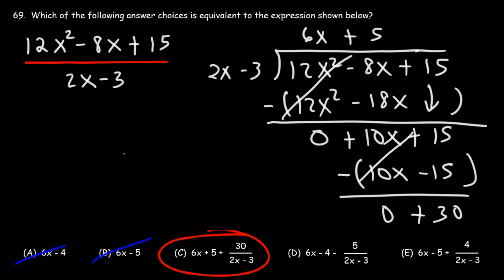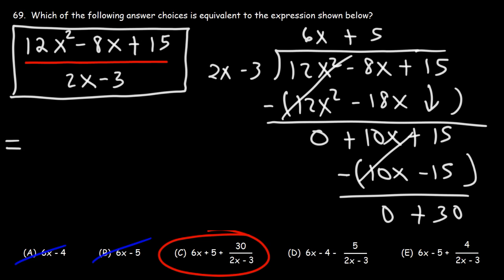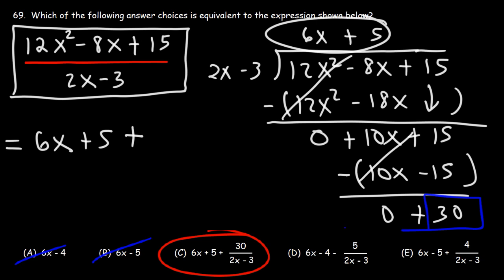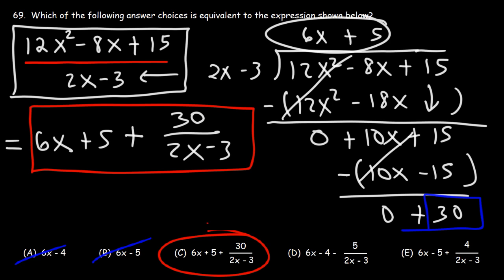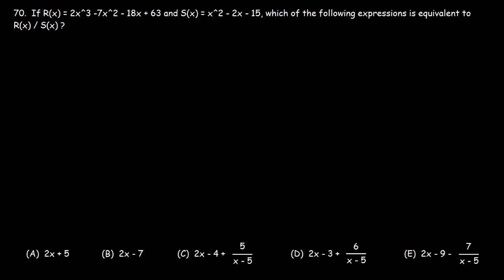The way you write your answer is like this. What we have here is all equal to 6x plus 5 plus the remainder, which is 30, divided by what you tried to divide by, which is 2x minus 3. So that's how you get the final answer, which is answer choice C.